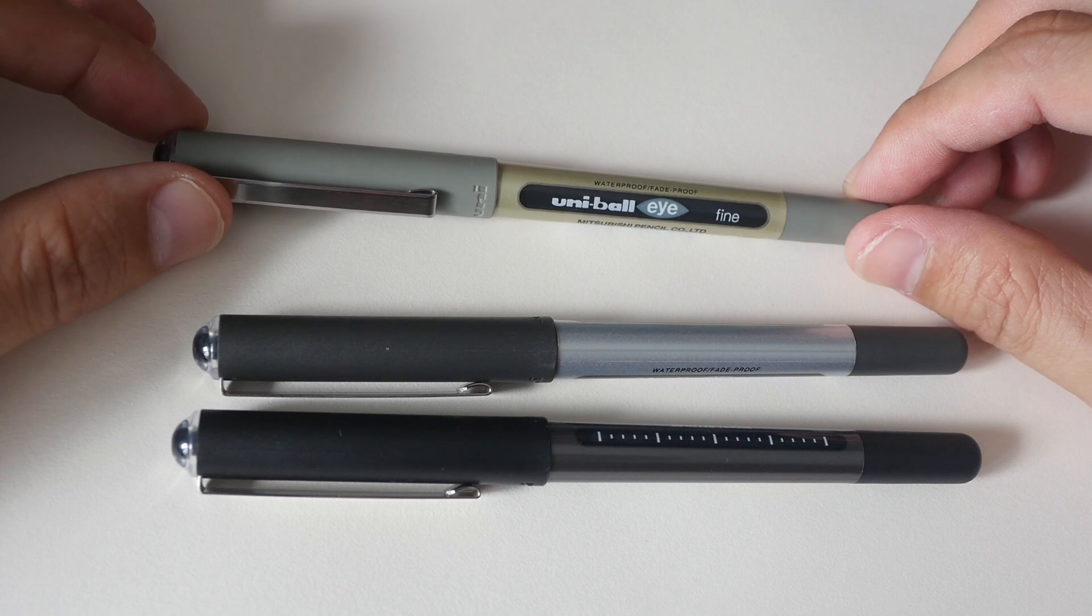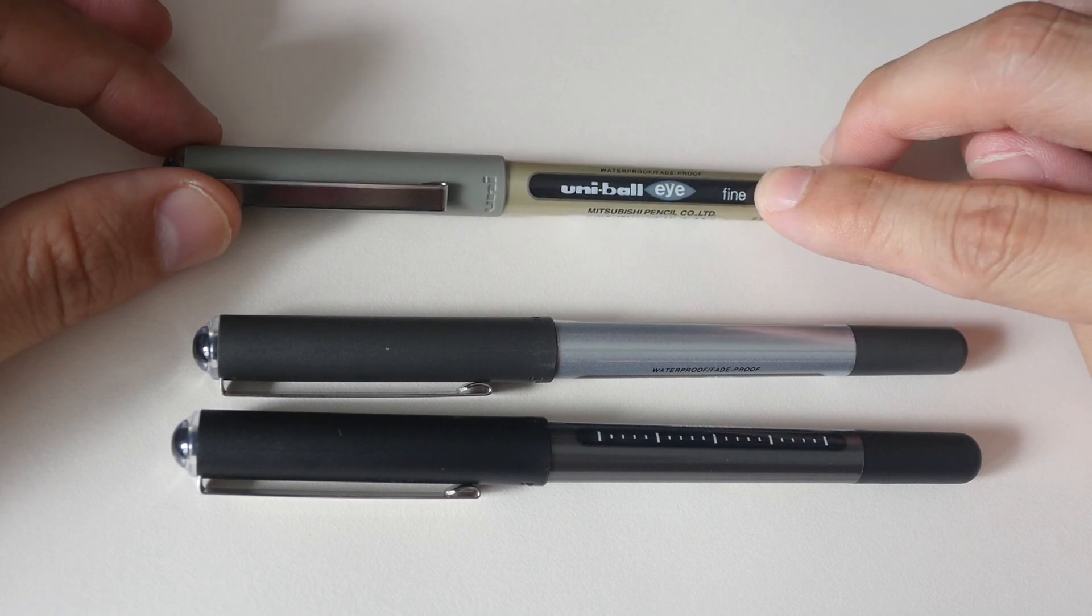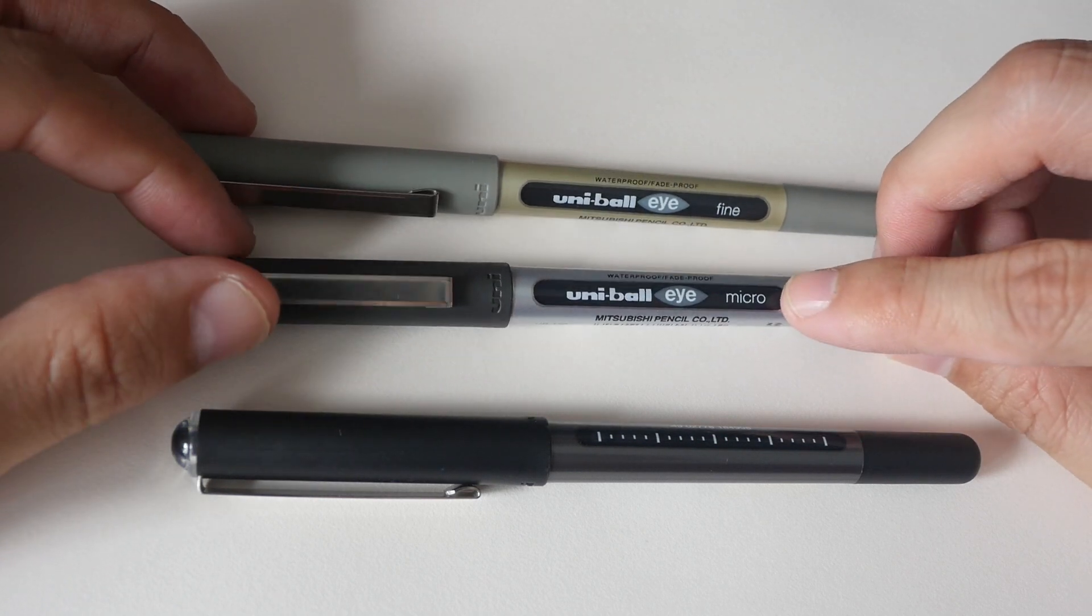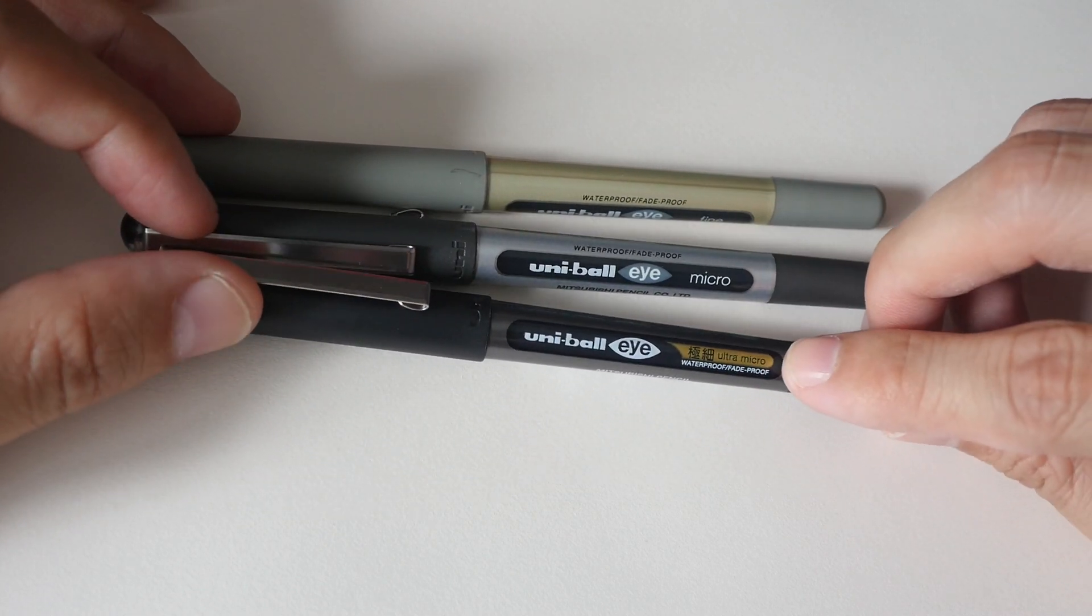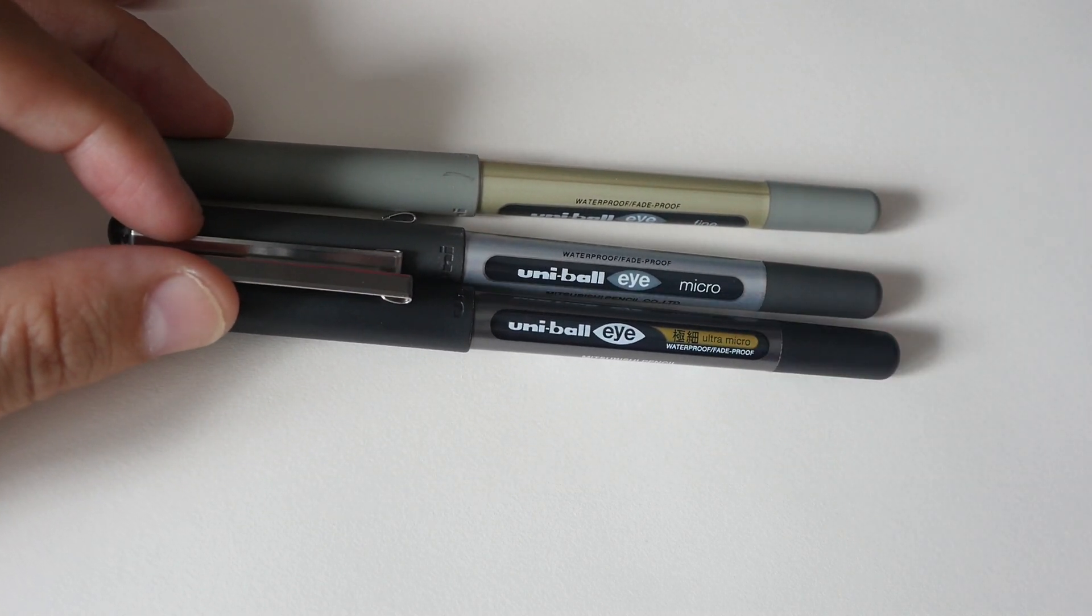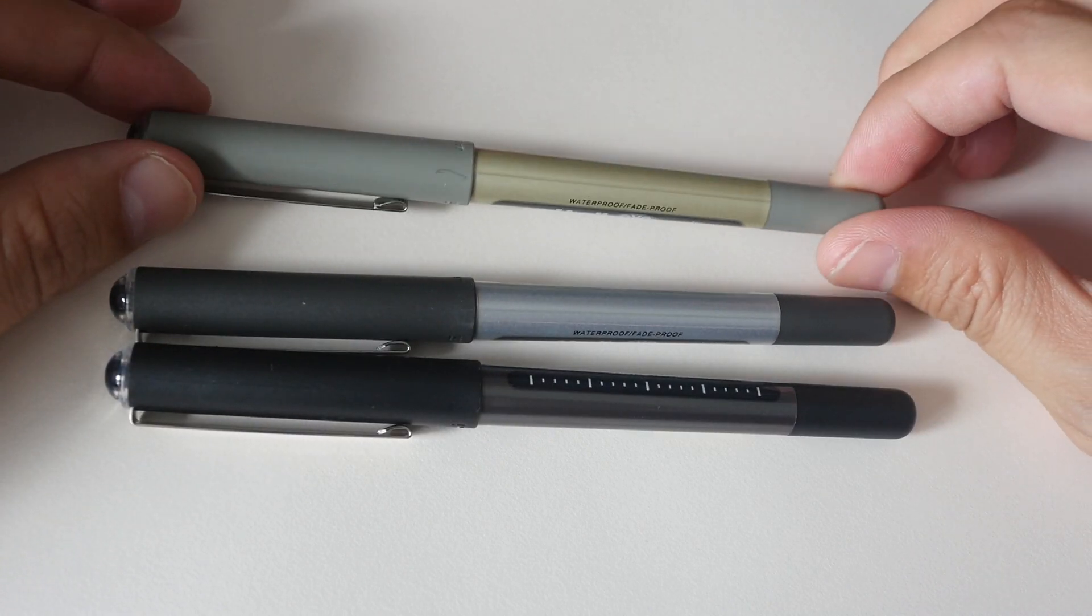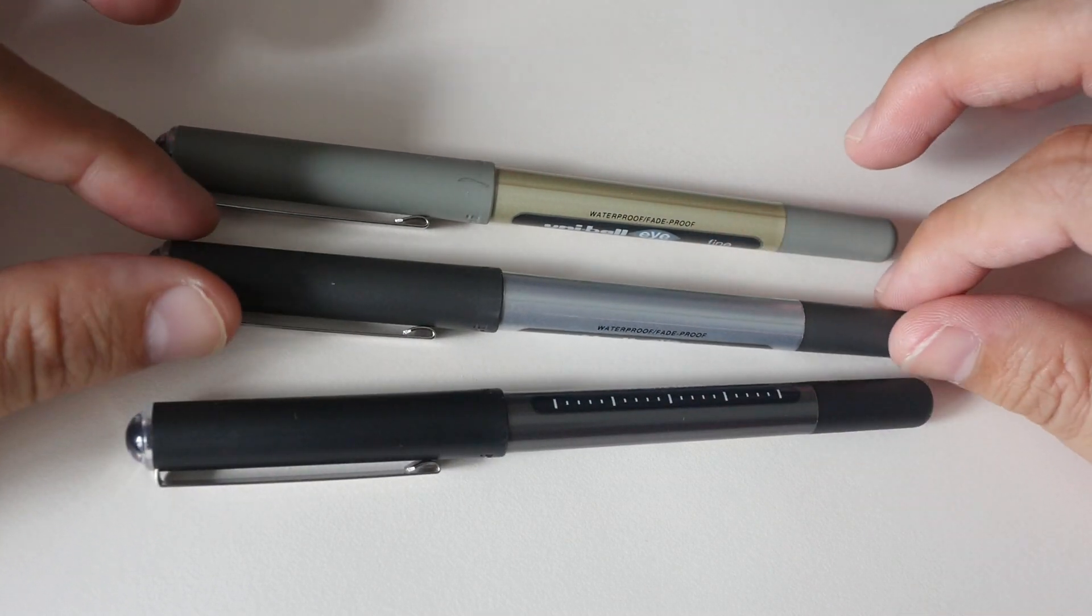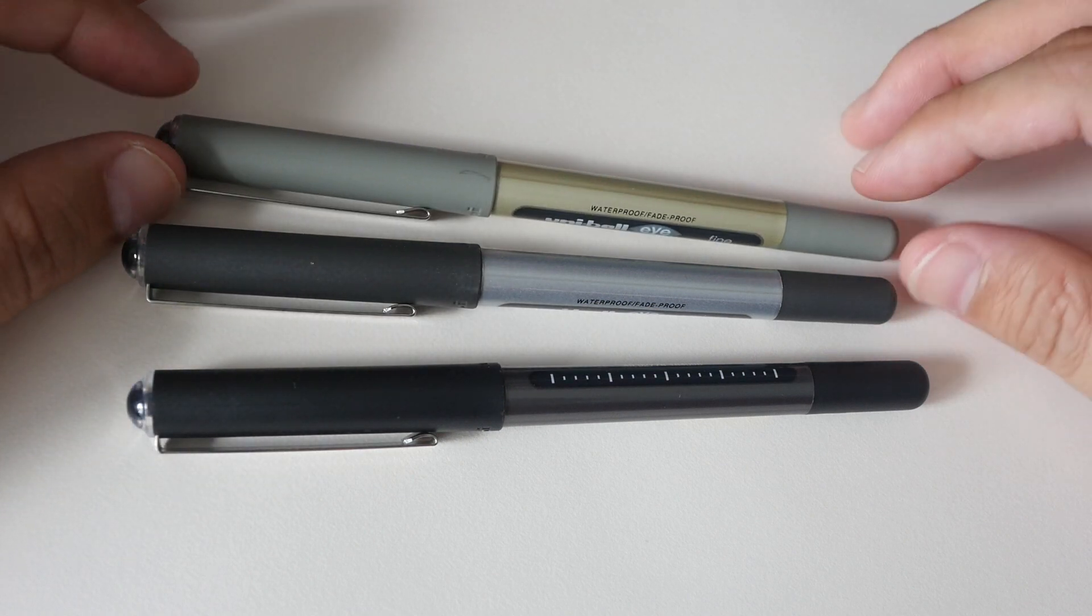These are the three Uniball Eye pens that I have. They come in different line widths. This one here is the fine, it's a 0.7 line. This is the micro which is a 0.5 line and the ultra micro which is 0.38. The design is pretty much similar except they have different colors, different shades of gray and black to differentiate between the line widths.